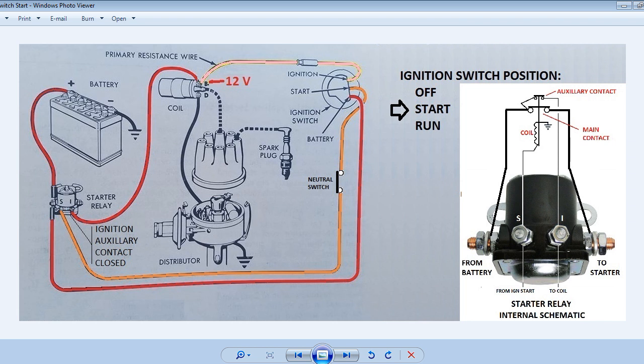Now when the ignition switch is turned to the start position the start wire shown in orange here will be energized. Also there will be 12 volts applied to the ignition wire shown in pink. With 12 volts on the orange wire the starter relay will be energized. On vehicles that have an automatic transmission there will be a neutral safety switch in the orange wire to prevent the engine start unless the transmission is in neutral or park. Some standard shift vehicles may have a clutch disengaged switch. And as you can see by the internal schematic both the main contact and the auxiliary contact will be closed.